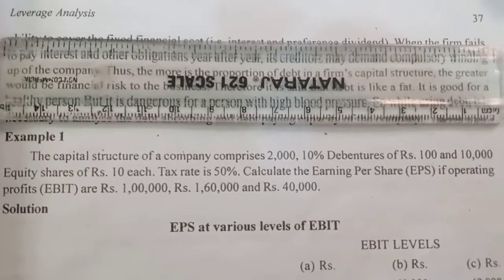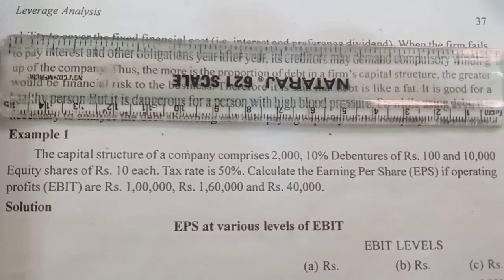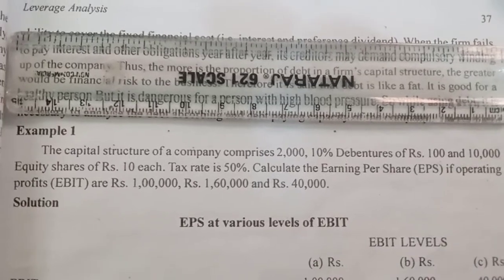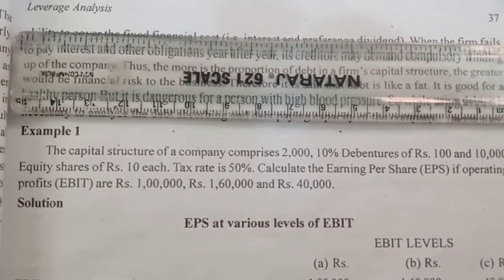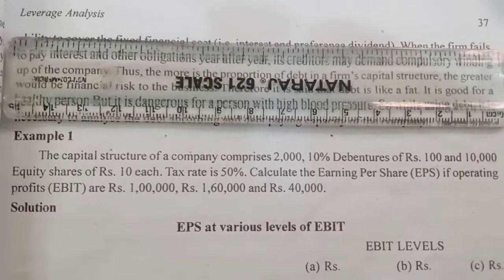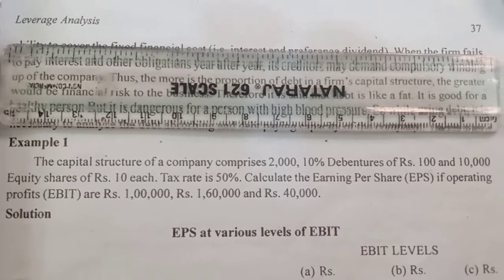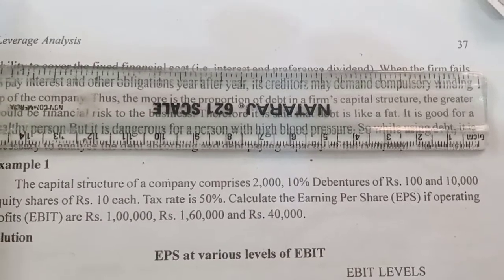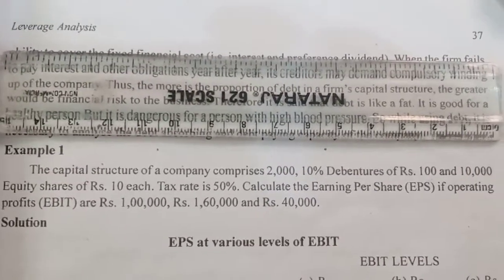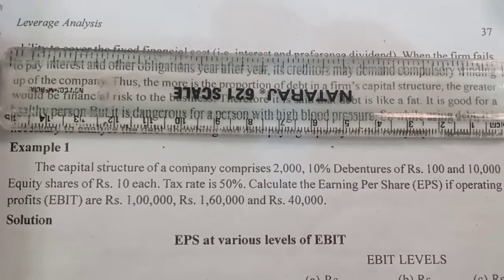Total debentures capital is 2,000 into 100 that is equal to 2 lakh. Debentures are bearing 10 percent interest. Therefore interest on debentures is equal to 2 lakh into 10 by 100, that is equal to 20,000. For equity: 10,000 equity shares of rupees 10 each, so total equity share capital is equal to 10,000 into 10, that is equal to 1 lakh. Tax rate is 50 percent. You are required to calculate EPS at three stages of EBIT: 1 lakh, 1 lakh 60,000, and rupees 40,000.